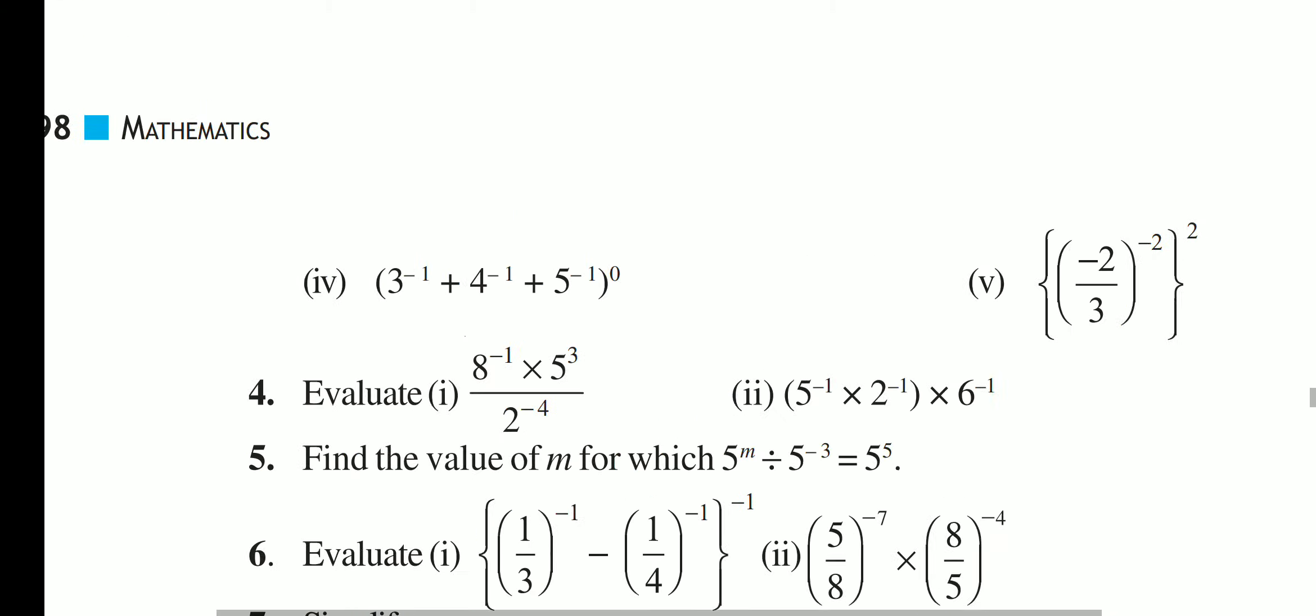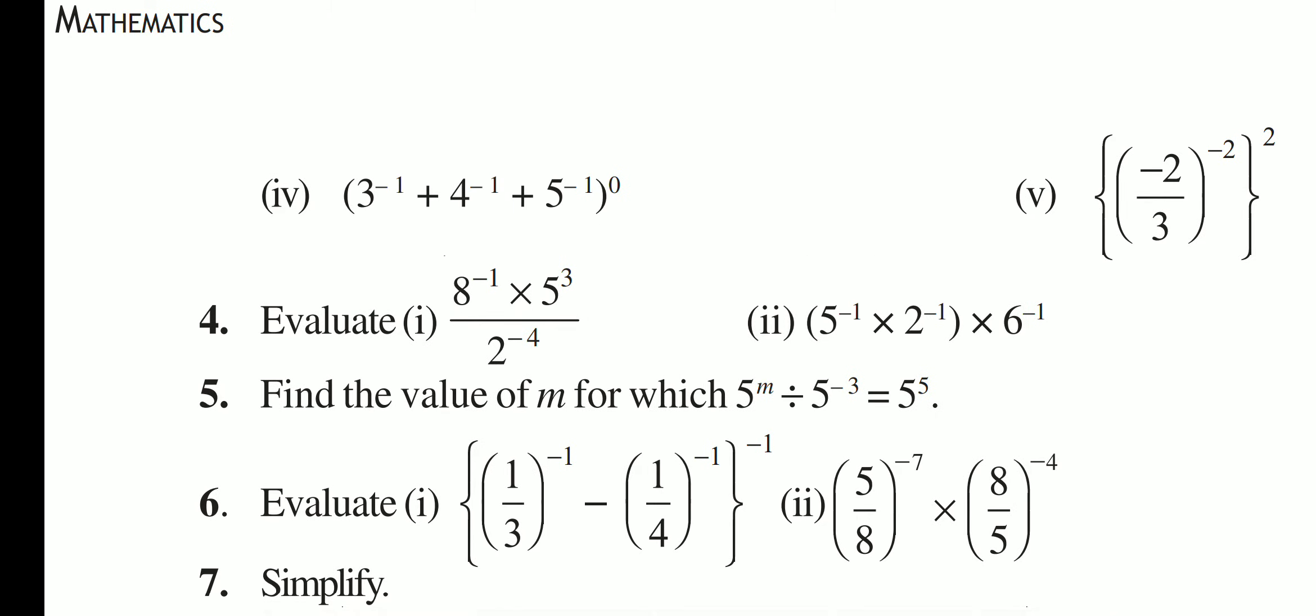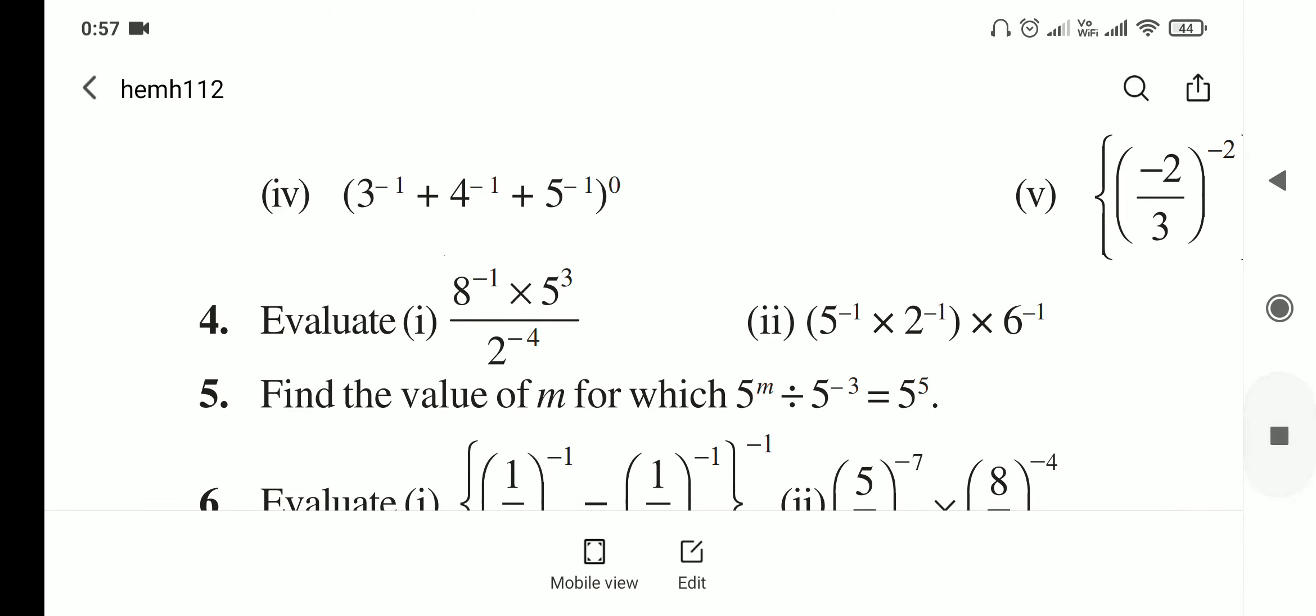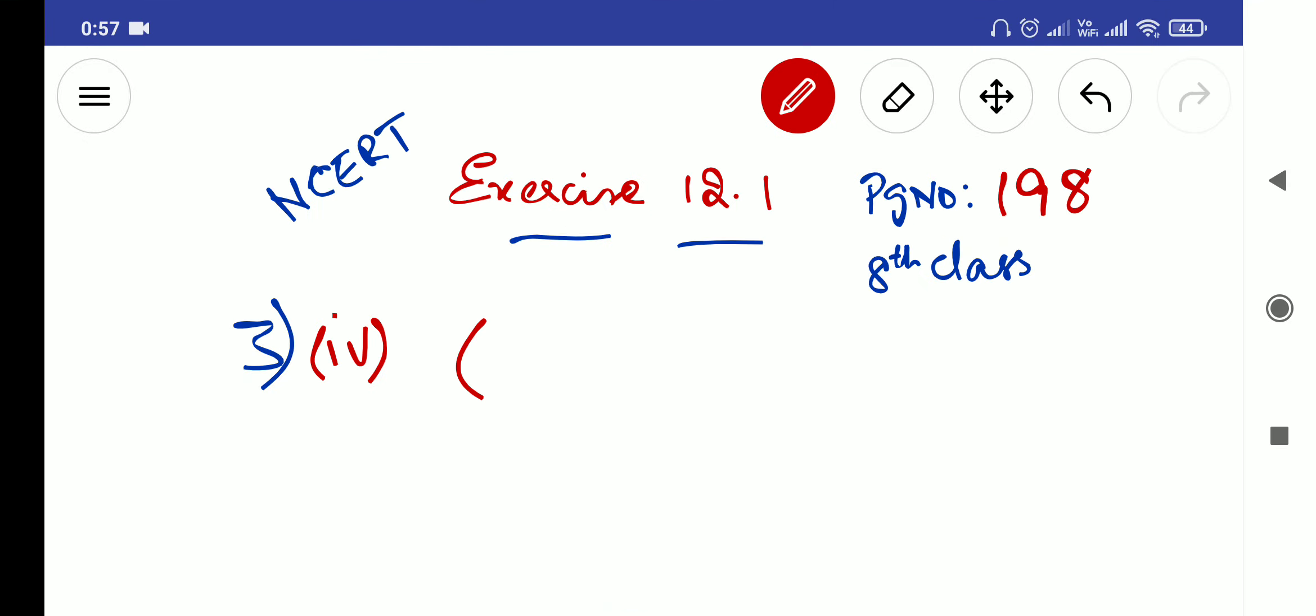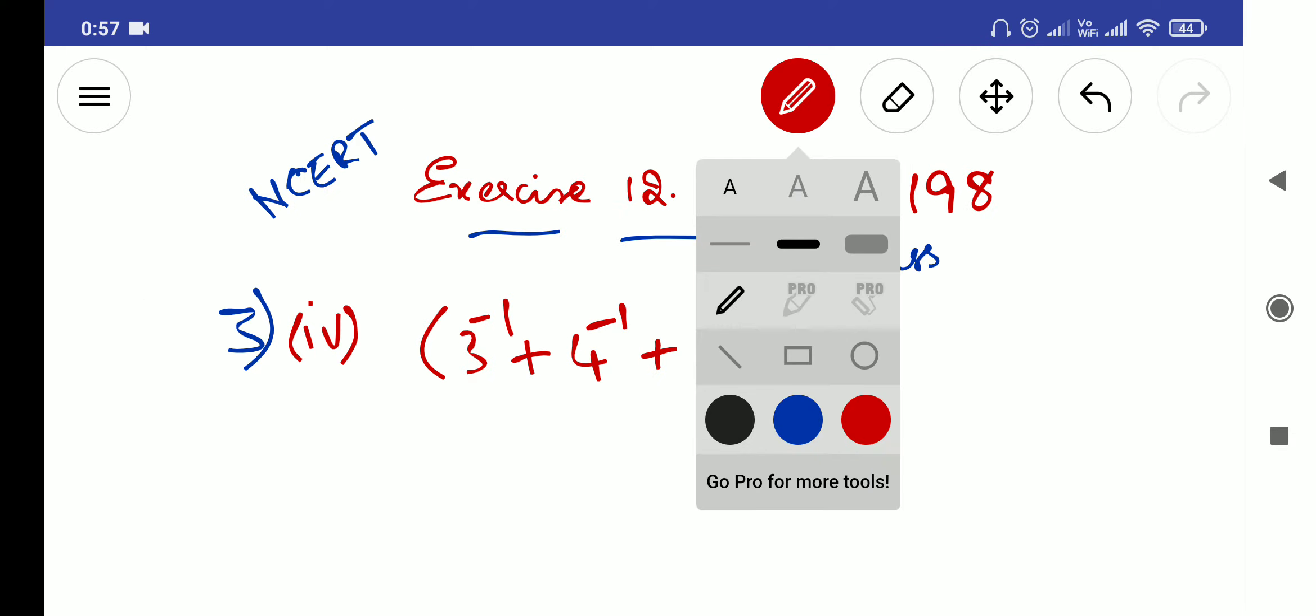3 power minus 1 plus 4 power minus 1 plus 5 power minus 1, whole power 0. So this one also: 3 power minus 1 plus 4 power minus 1 plus 5 power minus 1, whole power 0.